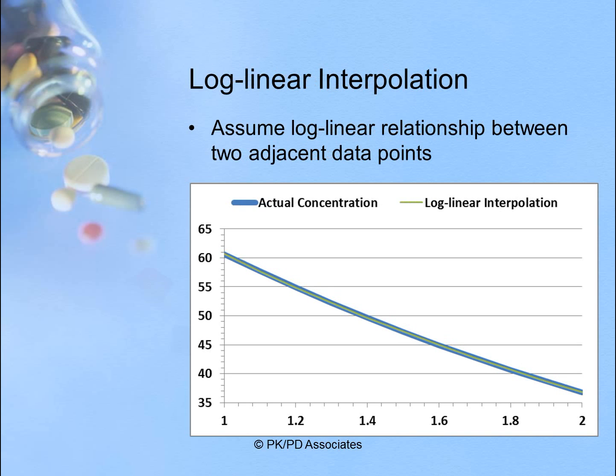The log-linear interpolation method assumes a log-linear relationship between two adjacent data points — it says that the concentration falls in a log-linear fashion between those two data points. As you can see, you get a more accurate representation of that trapezoid when you use log-linear interpolation.